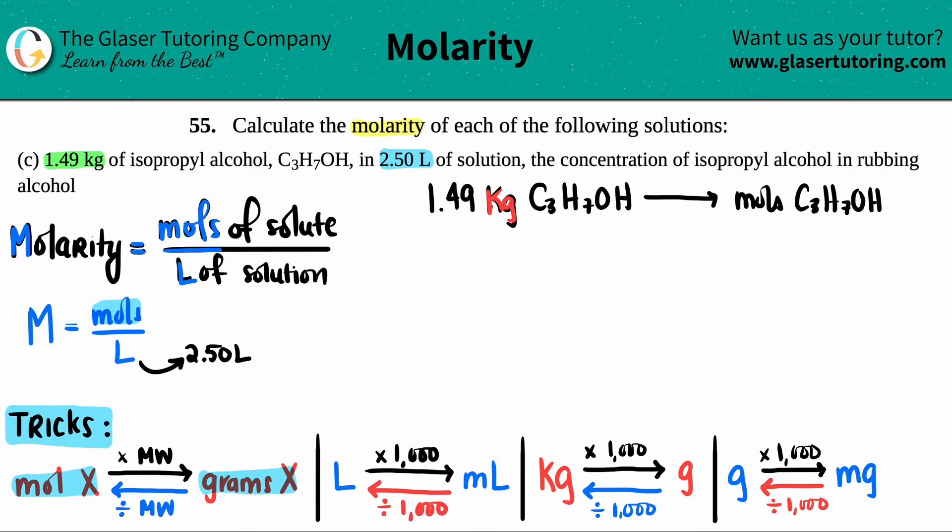I can go to a mole value, but in order to do that I need to have grams. I don't have that. I have kilograms. So what do you think is the first thing that I have to do? I gotta go to grams of isopropyl alcohol, and then I can finally go to moles.